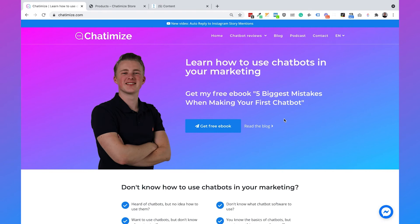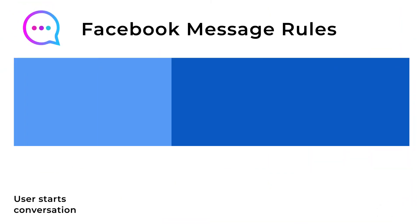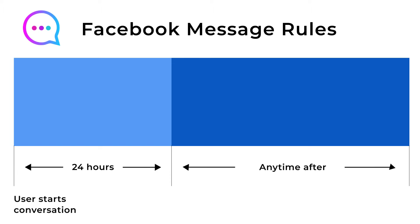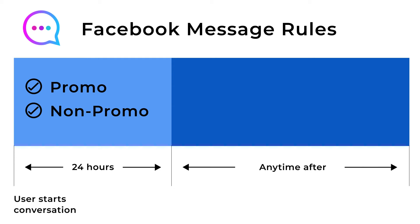But before we build this flow, we need to talk about the Facebook rules. Anytime a user messages your Facebook page, a 24-hour window opens, and within that window you can send any message you want — including promotional and non-promotional content. However, outside the 24-hour window, we can only send non-promotional content according to four message tags. Today we're going to use one of these tags: the post purchase update tag, which lets us send an order confirmation outside the 24-hour window.